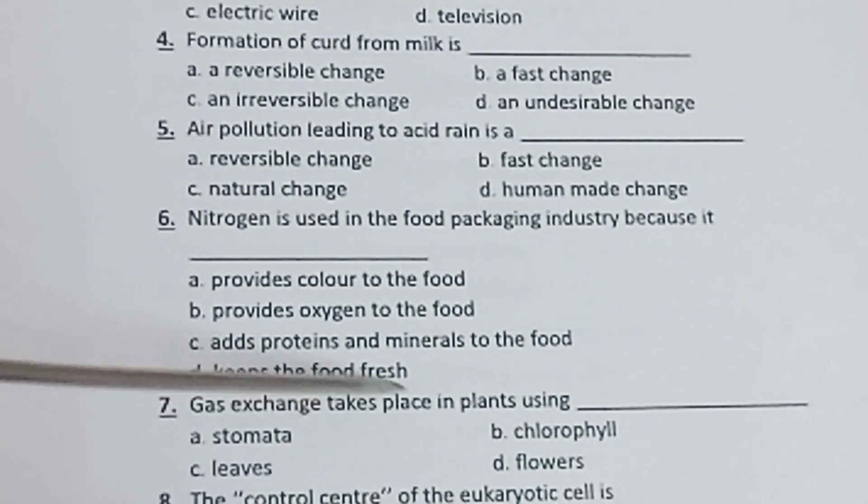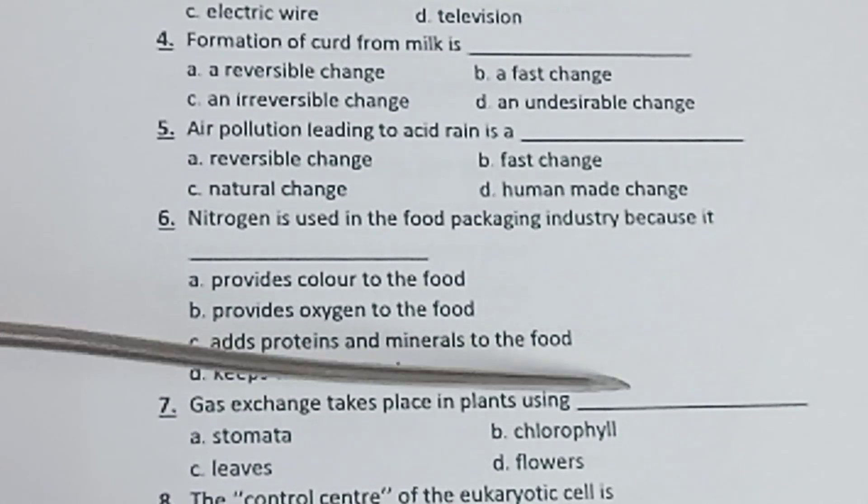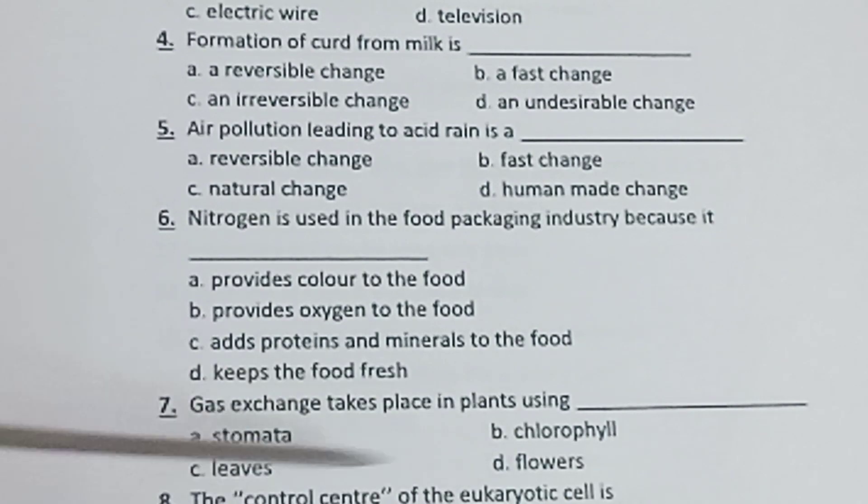Seventh one: Gas exchange takes place in plants using - a) stomata, b) chlorophyll, c) leaves, d) flowers.